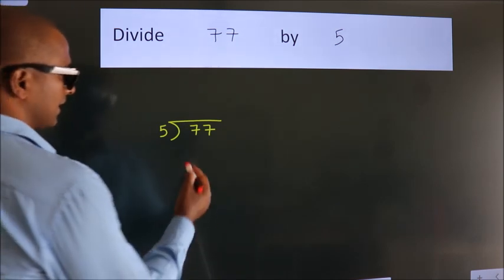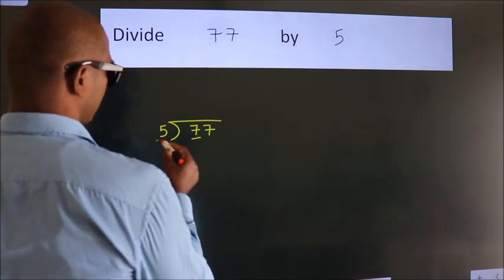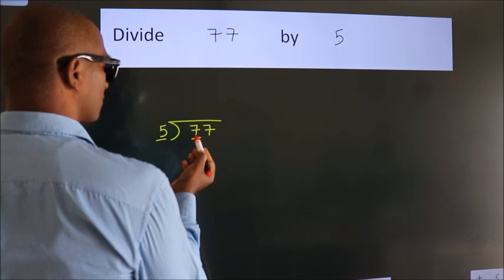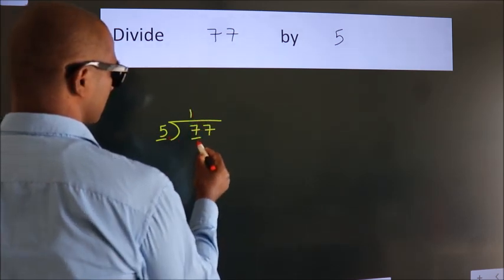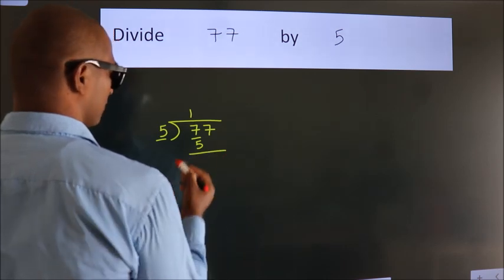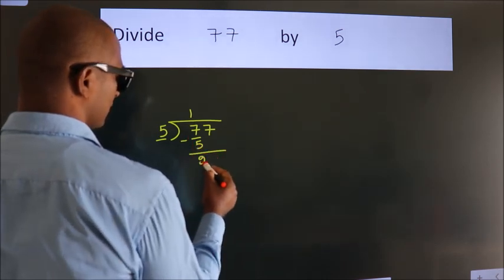Next, here we have 7, here 5. A number close to 7 in 5 table is 5 once 5. Now we should subtract. We get 2.